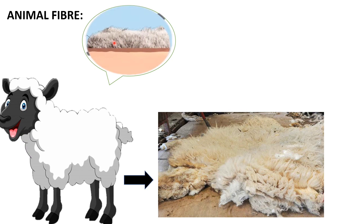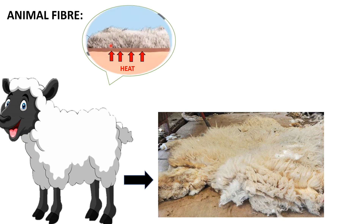Why do sheep require this thick layer of fleece? On the surface of their skin there are many small pores or spaces which trap air. Air is a bad conductor of heat, so the body heat cannot escape into the atmosphere. The heat is trapped inside, which keeps the animal warm.